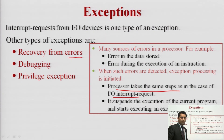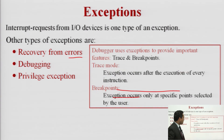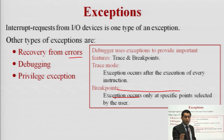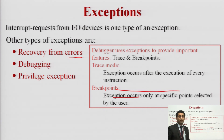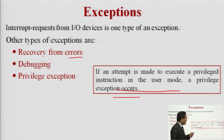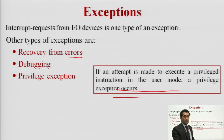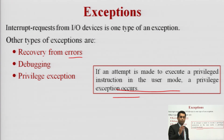The debugging category involves trace points or breakpoints — checkpoints we have seen in Windows operating system where software says 'this is not compatible.' Privilege exceptions occur when a user attempts to access something beyond their authorization, like a student trying to upload marks, which is a teacher's right — a prompt message appears. This covers all the exceptions.